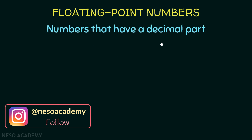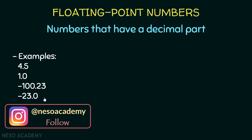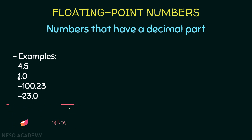So what is a floating point number? It is a number that has a decimal part. You have already seen some examples — all these numbers are floating point numbers. Even if we have point zero, this is still considered a floating point number.